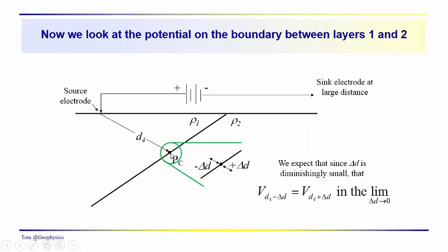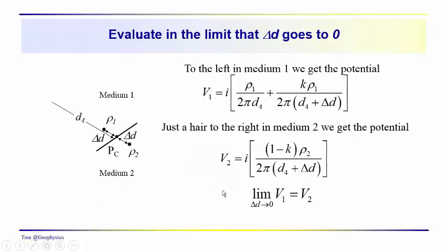So now we're going to take a look at a point which is sitting right on the boundary at a distance D4. And we know that we're going to get in the limit that δD goes to zero. We're going to bring the point in to the boundary from the ρ1 side, and then we'll bring the point in to the boundary from the ρ2 side. And we know that at this point, the two potentials should be equal.